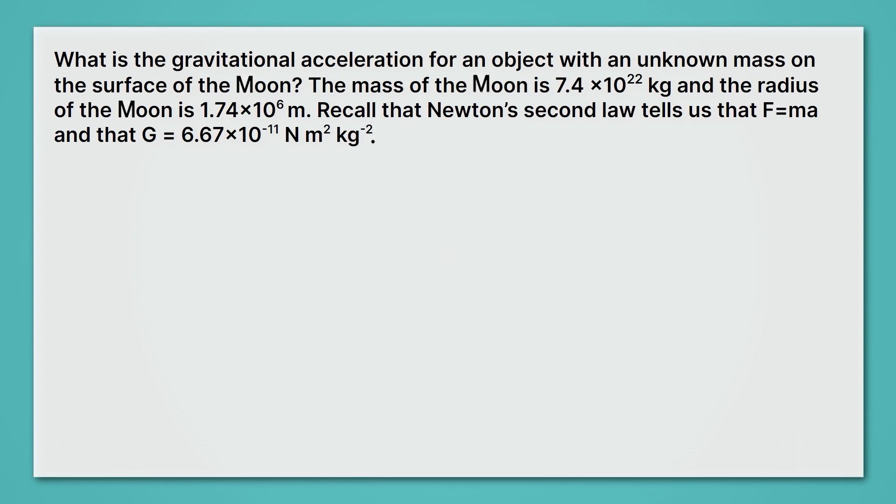What is the gravitational acceleration for an object with an unknown mass on the surface of the moon? The mass of the moon is 7.4 times 10 to the 22nd kilograms, and the radius of the moon is 1.74 times 10 to the 6th. Recall that Newton's second law tells us that F equals MA and we get big G. Go ahead, try this problem on your own. Can you solve for the gravitational acceleration on the moon?